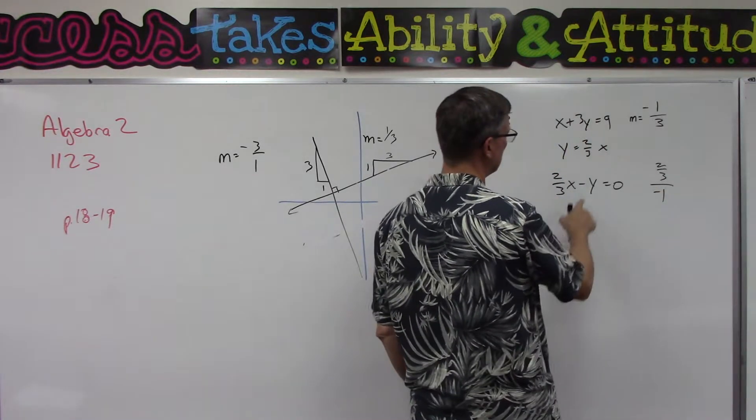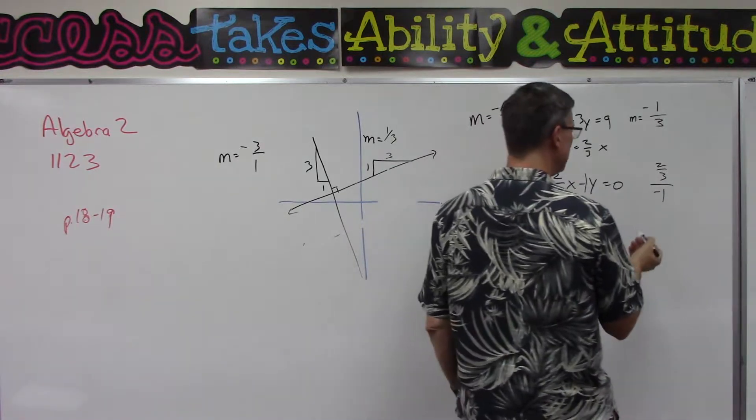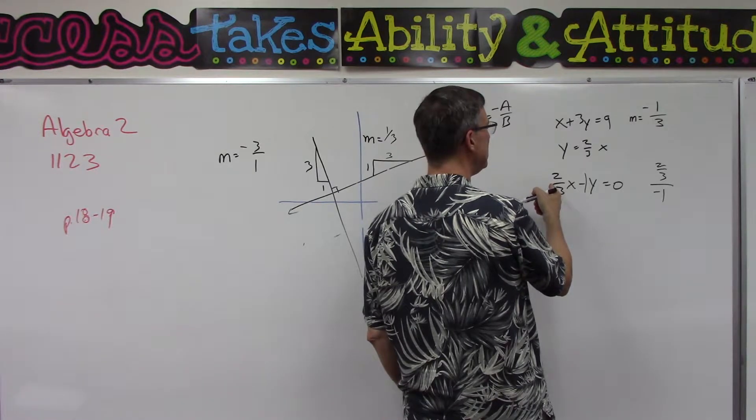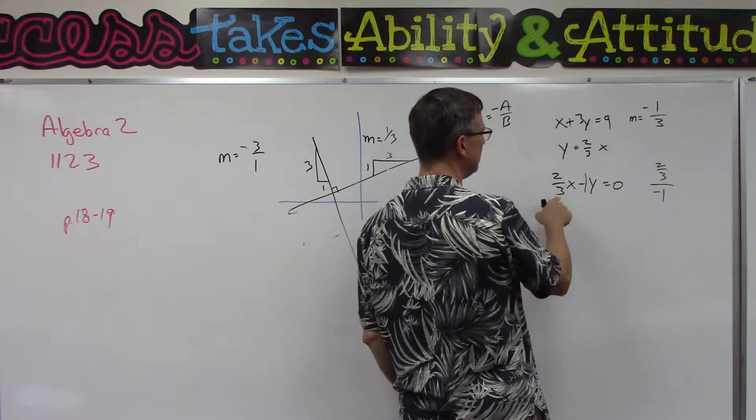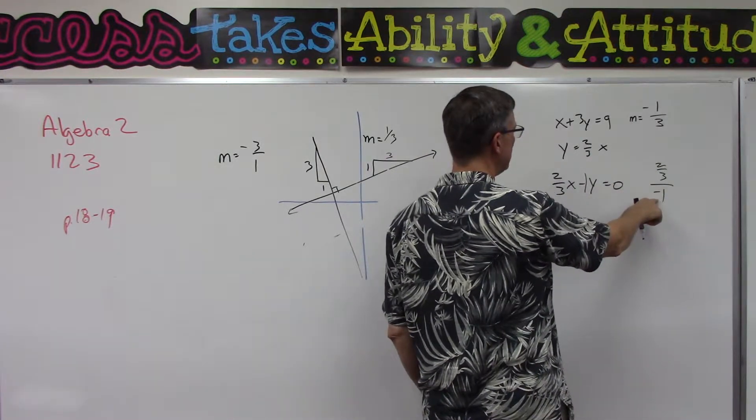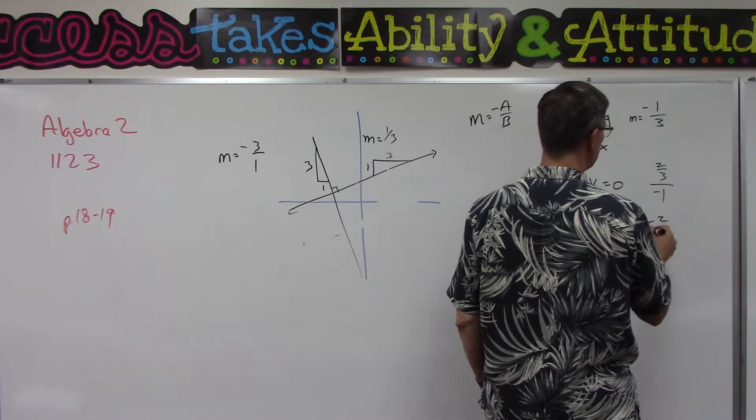Okay, so that's going to give me negative two-thirds, but then I need to do the opposite of that because it's negative a over b. So two-thirds, the a over the b, gives me negative two-thirds, but then I need to change it to positive.